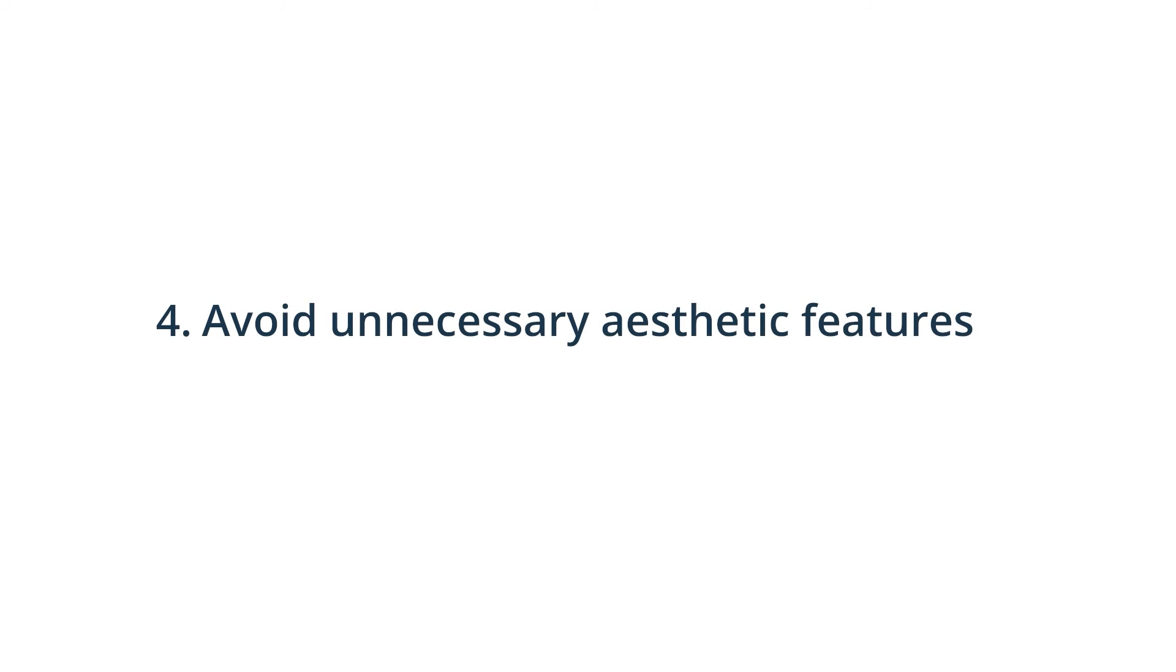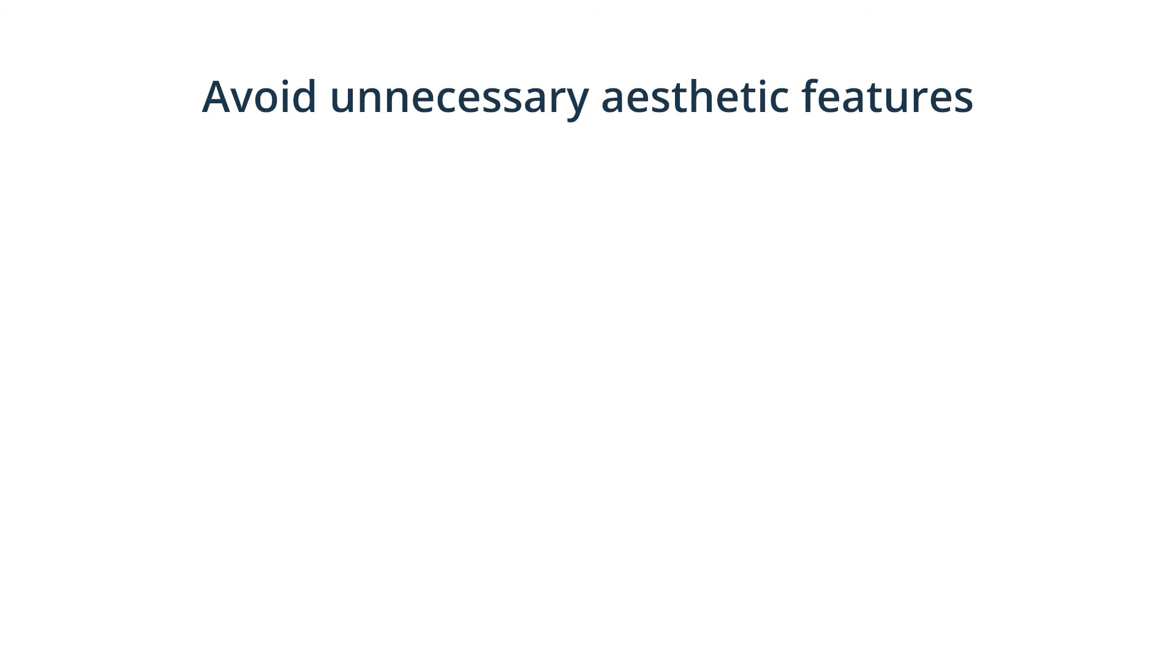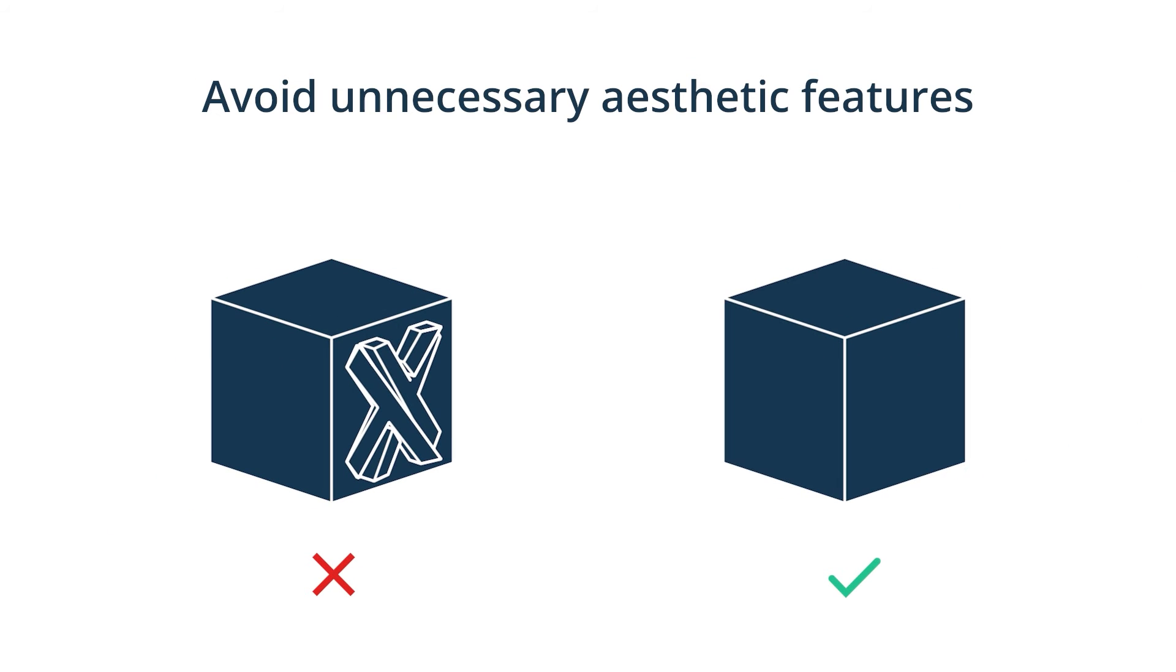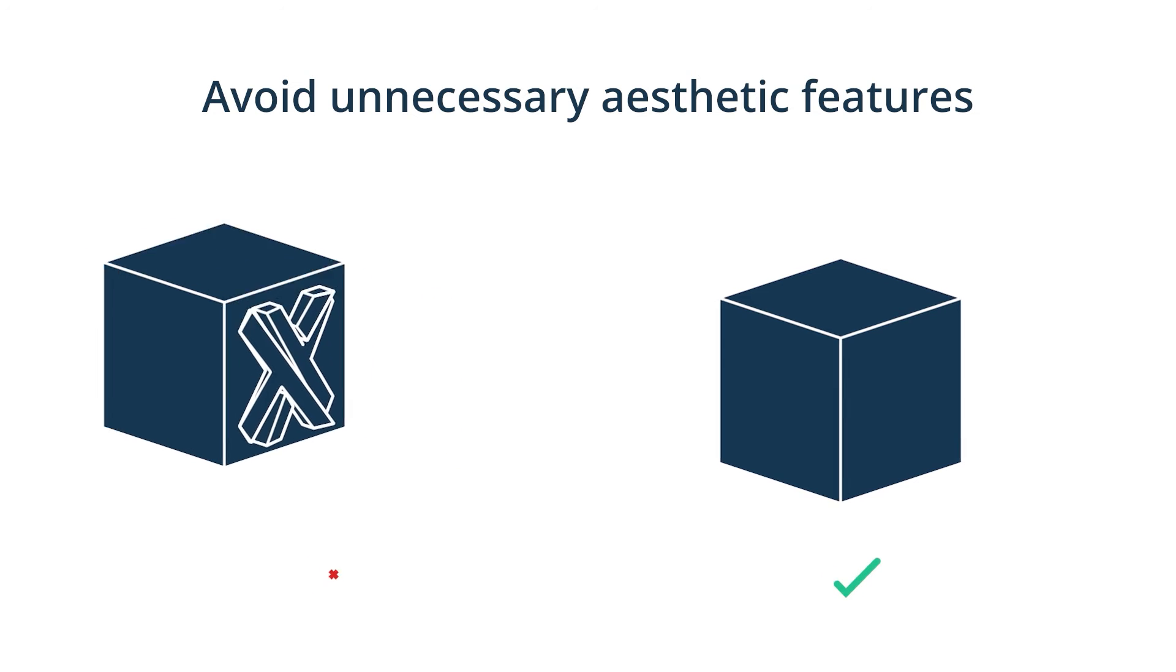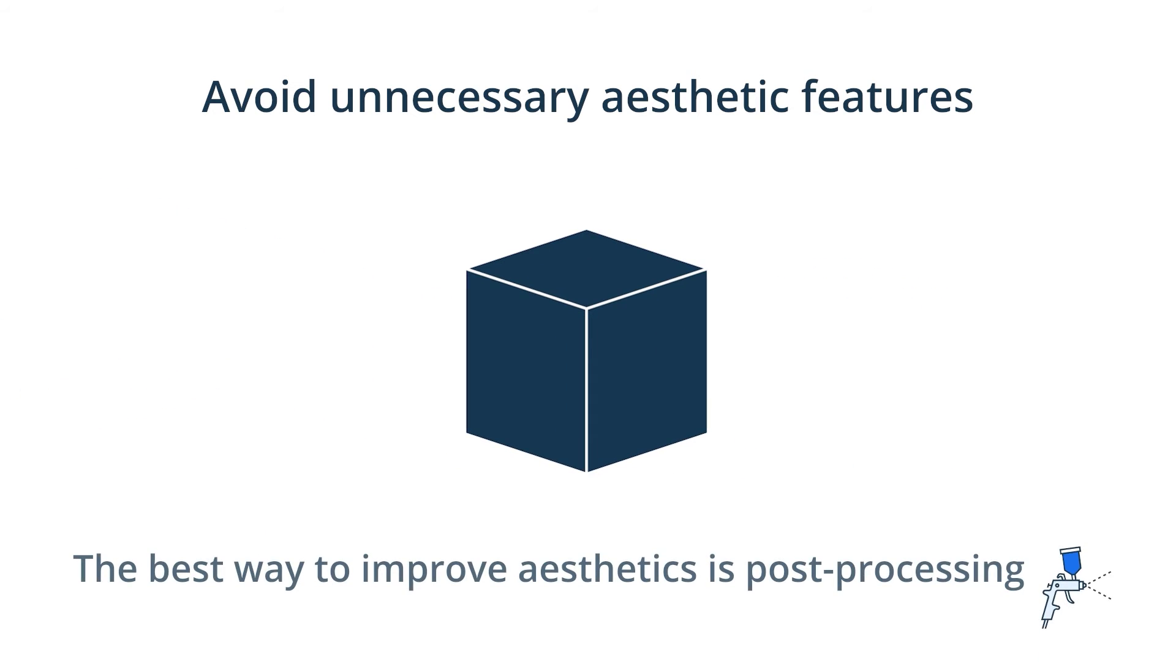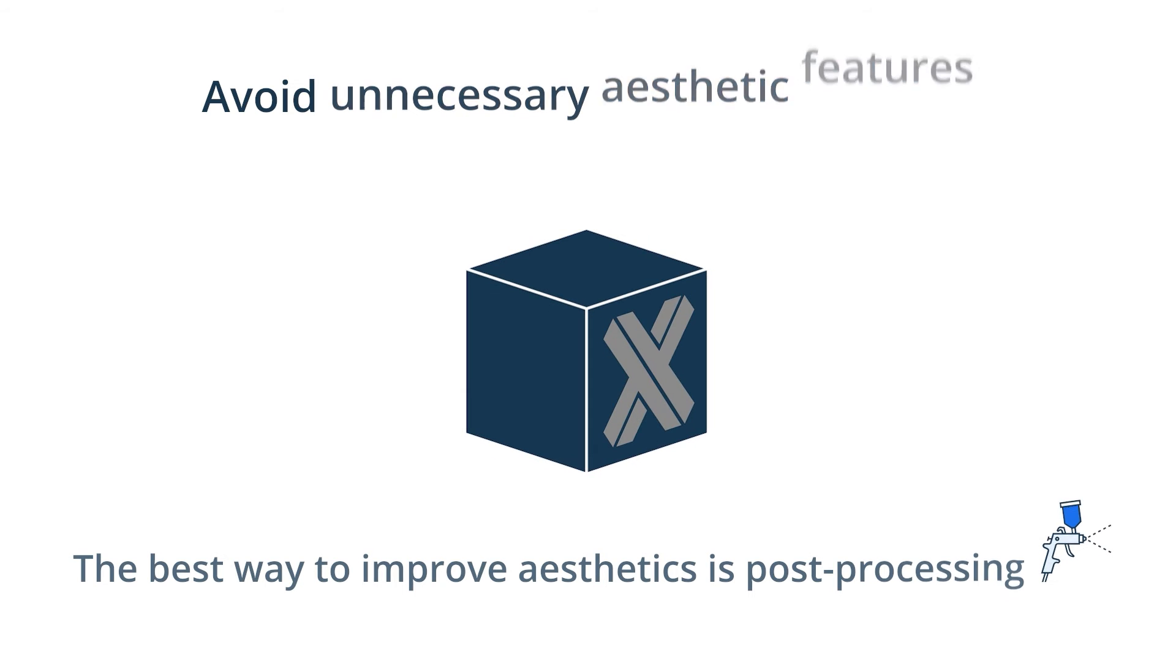4. Avoid unnecessary aesthetic features. Some aesthetic features cannot be efficiently machined. As a designer, you should ask yourself, what CNC machining process would this feature require, or is it a 5-axis or 3-axis machining process? You can improve your design by focusing on the accuracy of required features rather than aesthetics. It is best to use post-machining processes to change aesthetics.